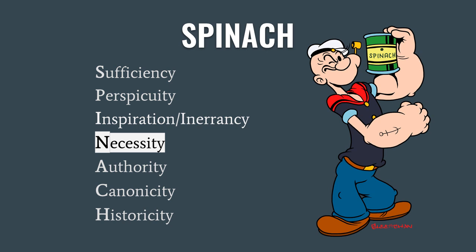We're going to cover necessity this week. Next week, John Schultz will teach a special lesson in commemoration of the 50th anniversary of the PCA — the official founding date was December 4th, 1973, at Briarwood Presbyterian Church in Birmingham, Alabama. I'll be back the following week for authority, then canonicity and historicity. We will not have Sunday School on Christmas Eve, so that brings us through the end of December.